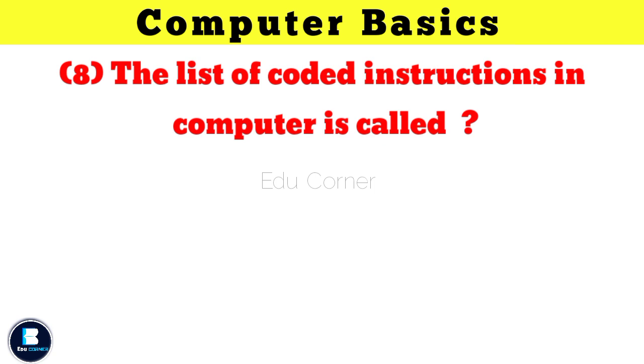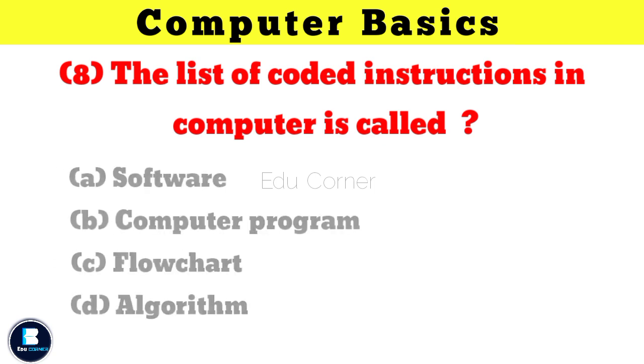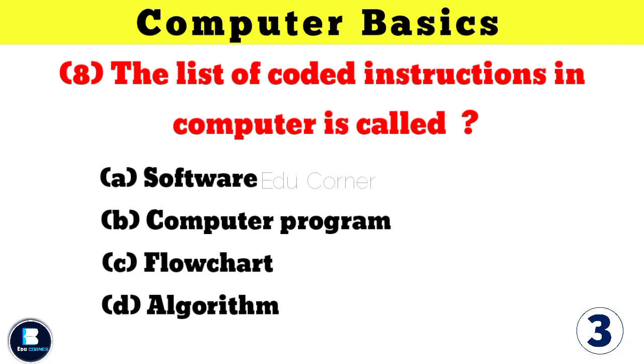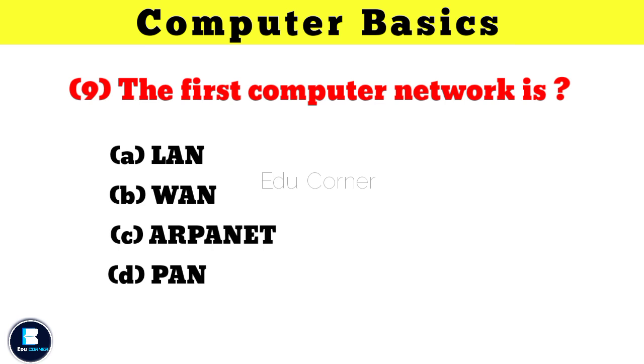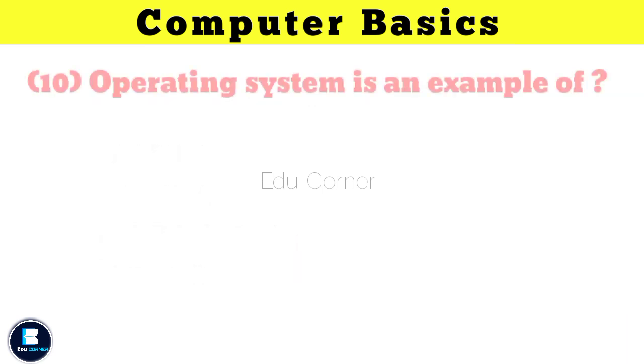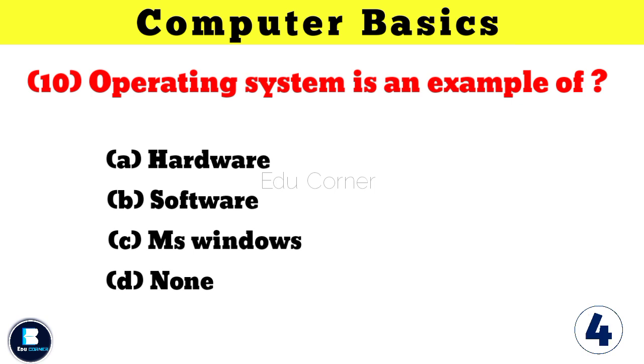The list of coded instructions in computer is called computer program. The first computer network is ARPANET. Operating system is an example of software.